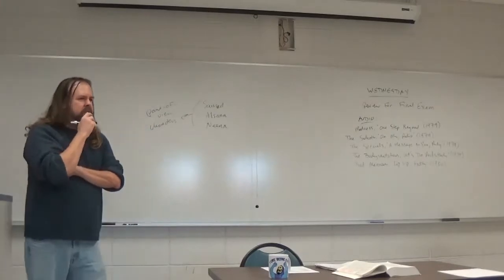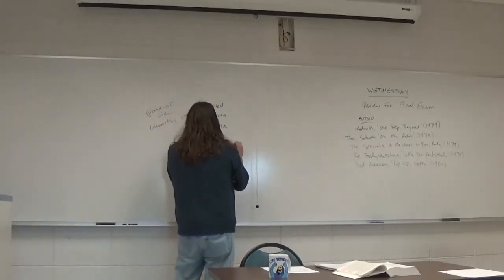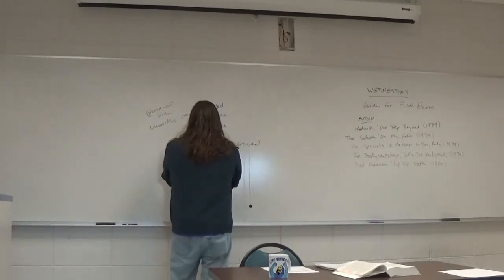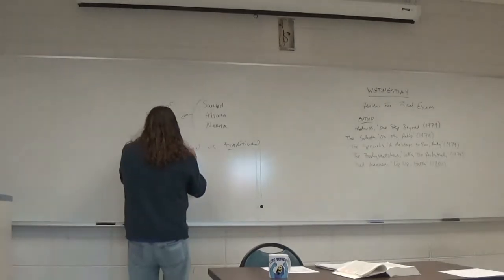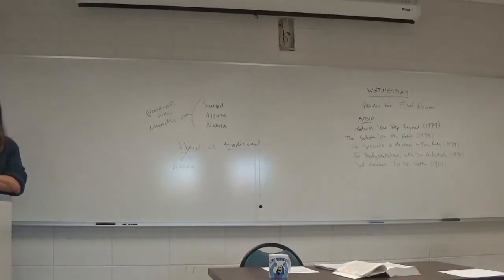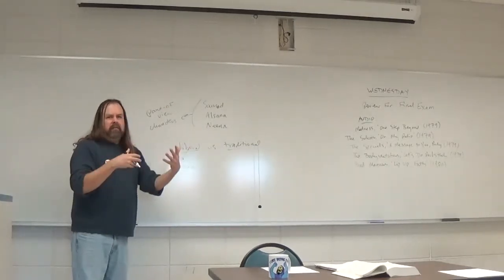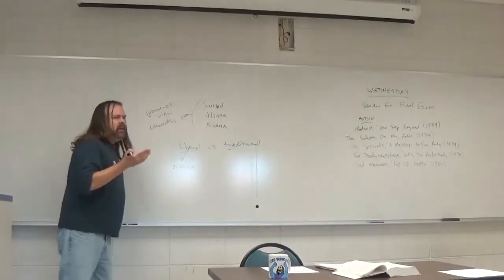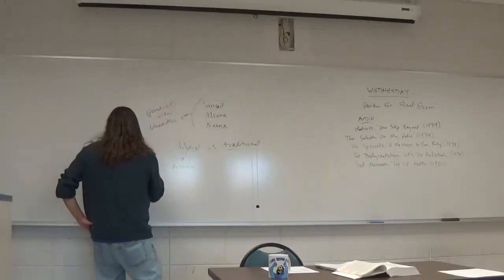It seems to be almost entirely told from the point of view of the Bangladeshi characters. The only perspective characters we get are Samad, Alsana, and Nina. These other characters—Archie and Clara—are present, Saul Josifovic is present, and they're important, but we never see things from their point of view. It's all from members of this family. There's also a battle between liberal and traditional views towards the end.